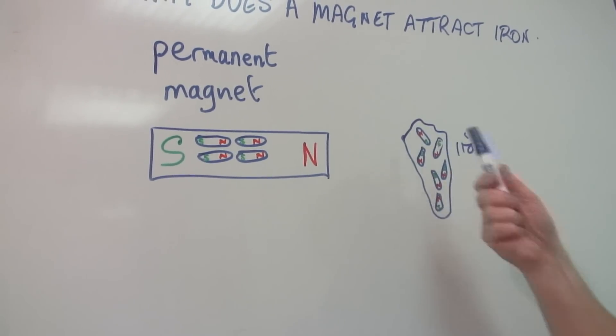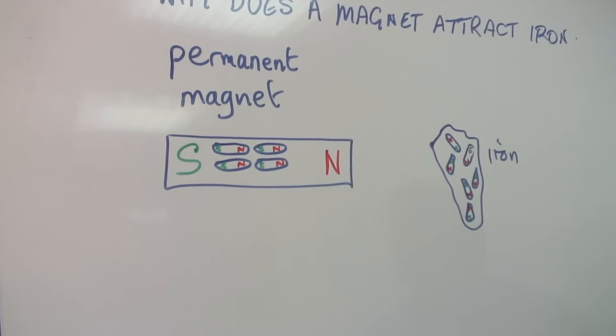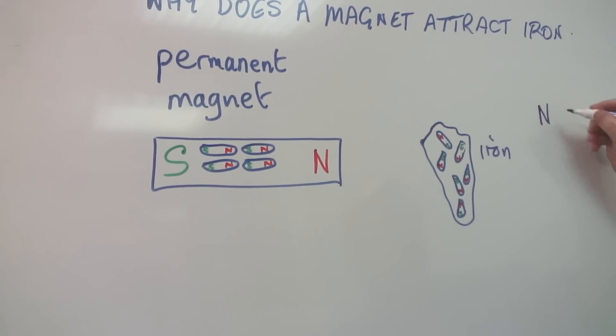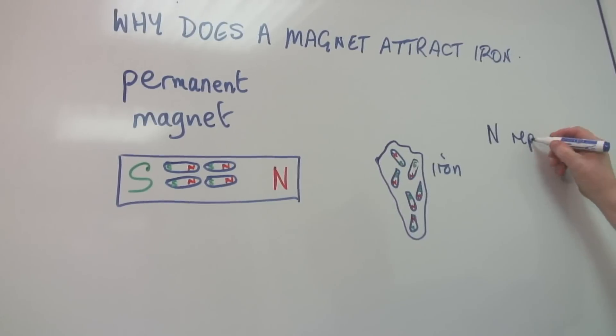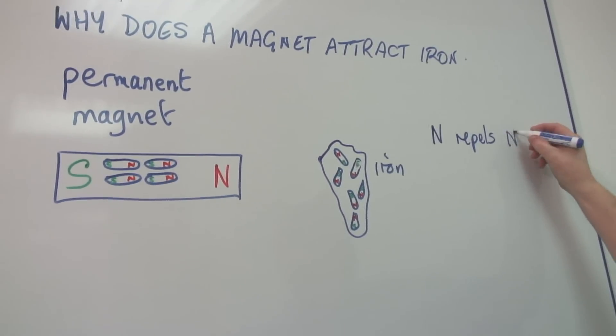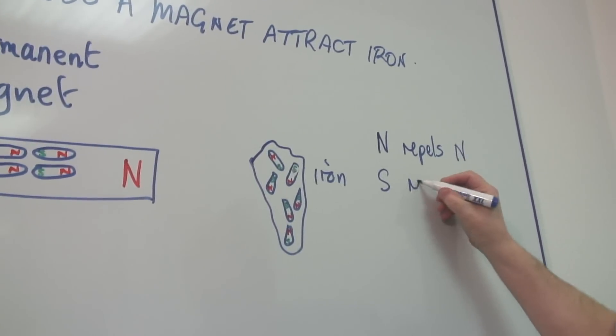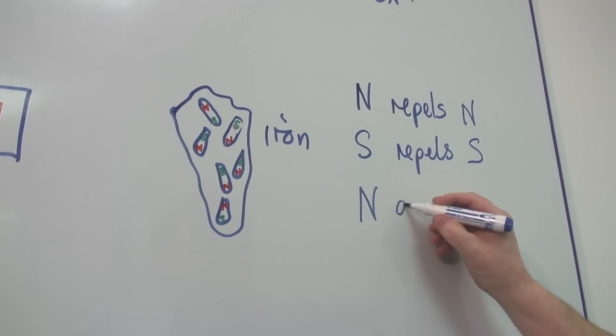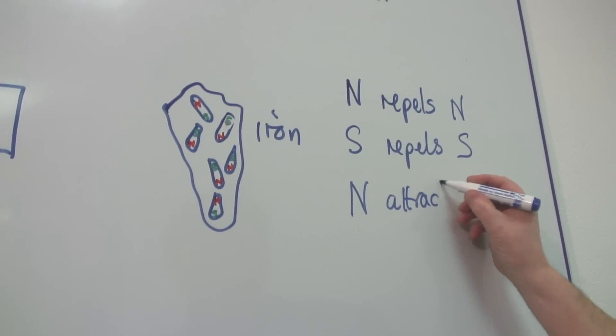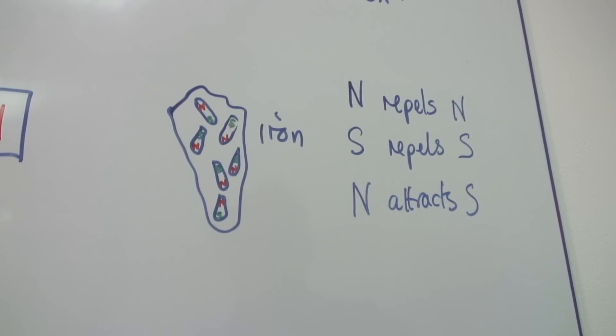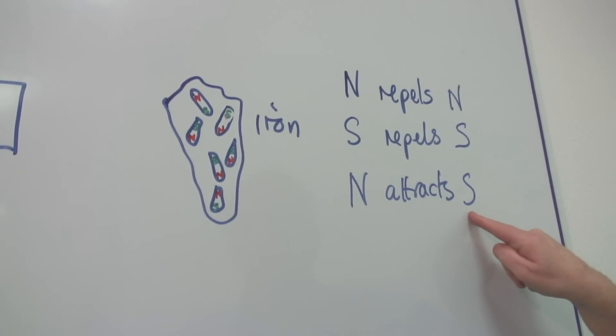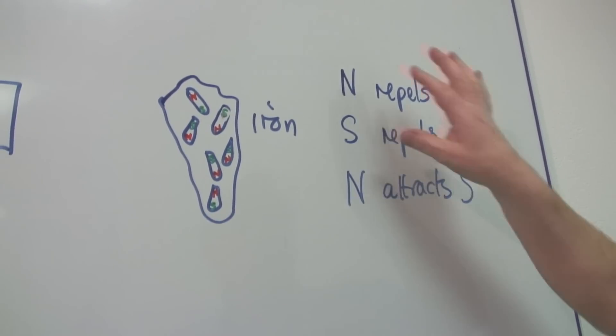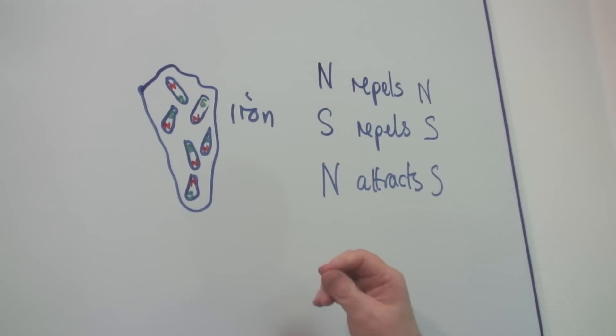So north repels north. South repels south. But north attracts south. So if the poles are different, there's an attraction. If they are the same, there's a repulsion.